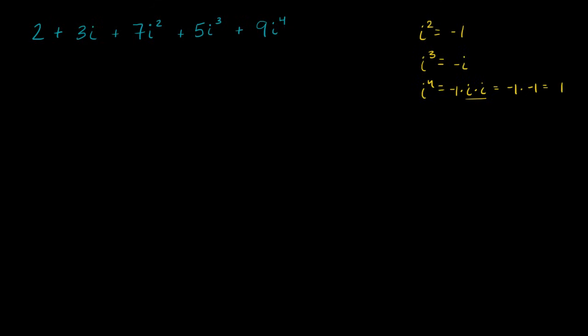So we can rewrite this whole thing. We could rewrite it as 2 plus 3i. 7i squared is going to be the same thing. So i squared is negative 1. So this is the same thing as 7 times negative 1. So that's just going to be minus 7.